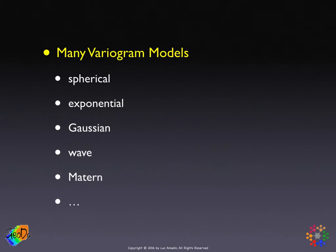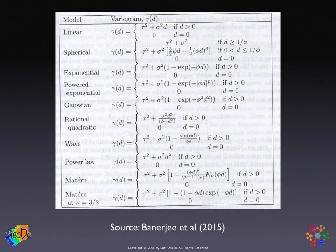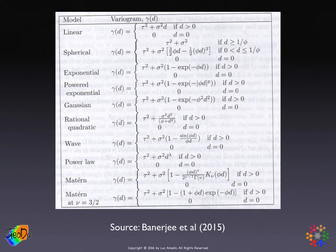So what are these variogram models? There are very many of them. The most common ones are the spherical, the exponential, the Gaussian, the wave model, and a whole family of models due to Matérn. They're very flexible and allow different shapes depending on their parameters. This table in Banerjee et al. summarizes the functional forms — all are functions of distance and include variances, covariances, and nuggets. The variances are basically the same as the sill.